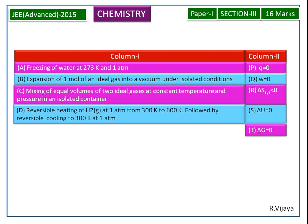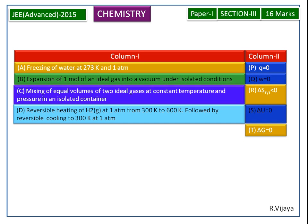Now we see the cumulative answers. For the A process, the answers are R and T. For the B process, the answers are P, Q, and S. For the C process, the answers are P, Q, and S. For the D process, the answers are P, Q, S, and T.